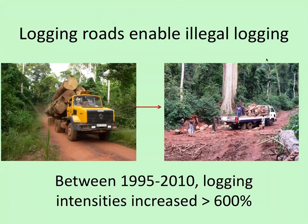One example of how to stop illegal logging: it can be as simple as using a caterpillar to dig a trench, preventing vehicles from going in to remove logs. We were working with a logging company that was doing exactly this to protect timber inside their concession. However serious a problem seems, there are always solutions.